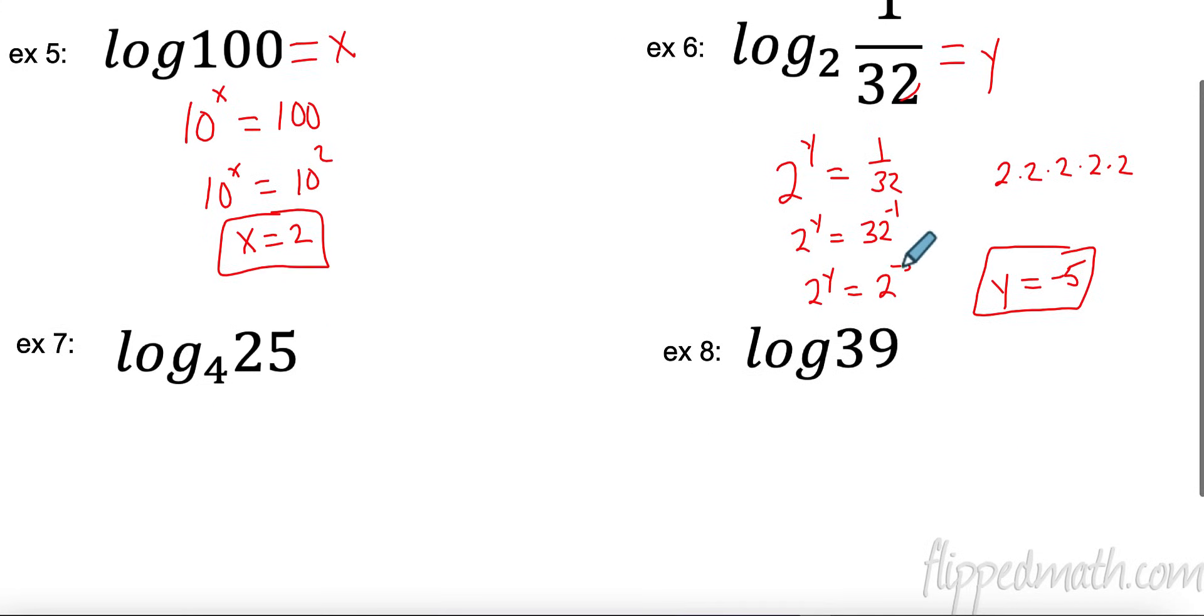Let's go down here to number 7. 4, let's call this z. So 4 to the z equals 25. Well, is there a power of 4 that equals 25? 4 squared is 16 and 4 to the... No, this cannot be done without the use of a calculator.